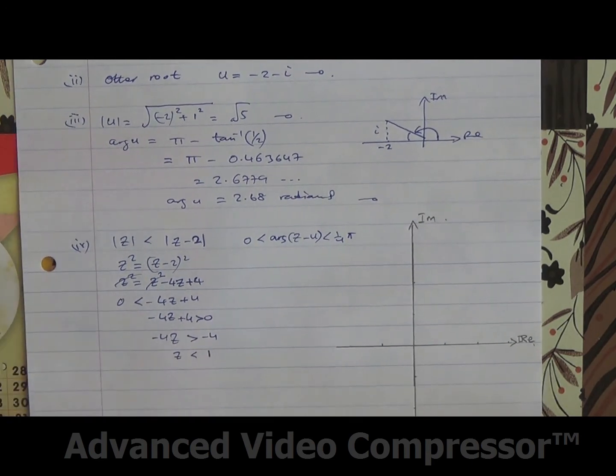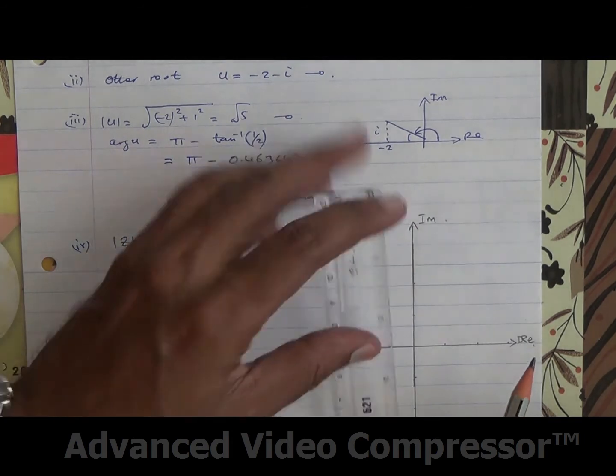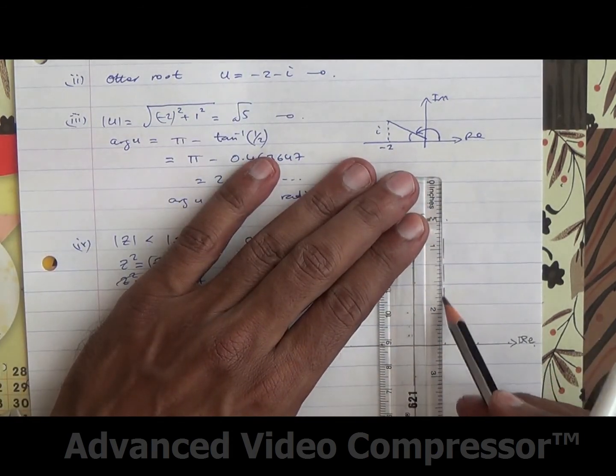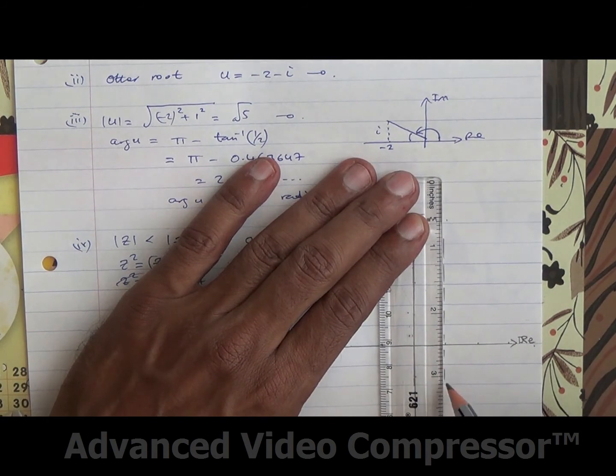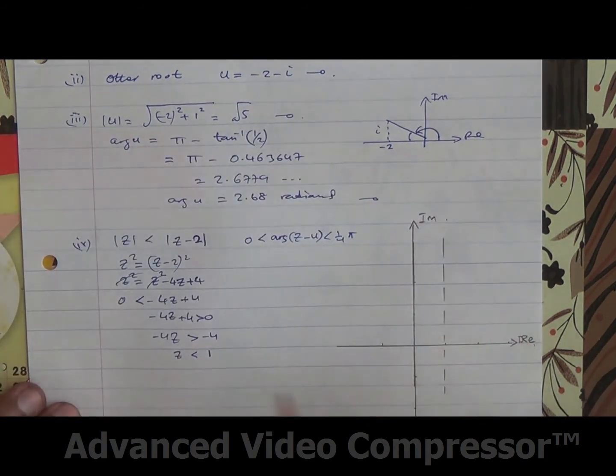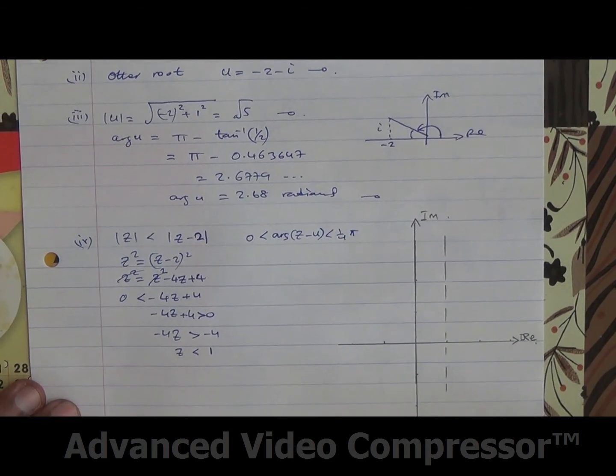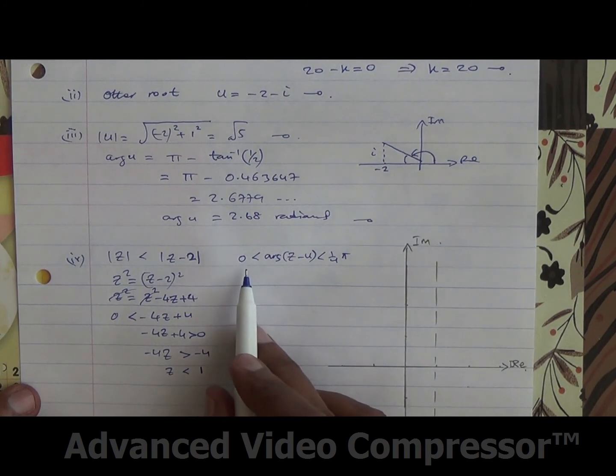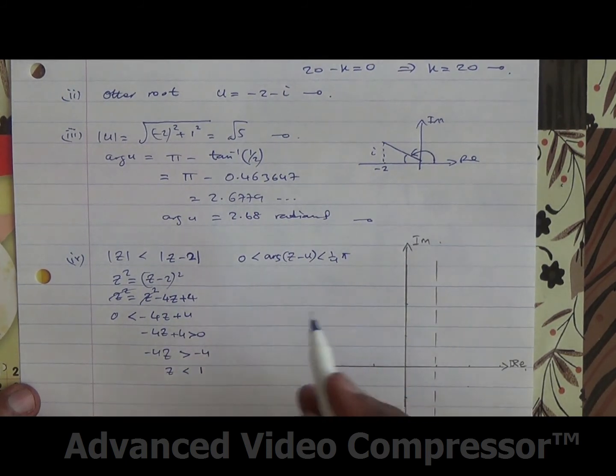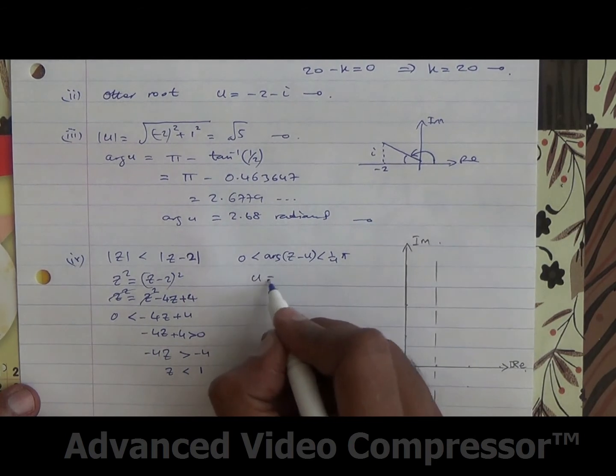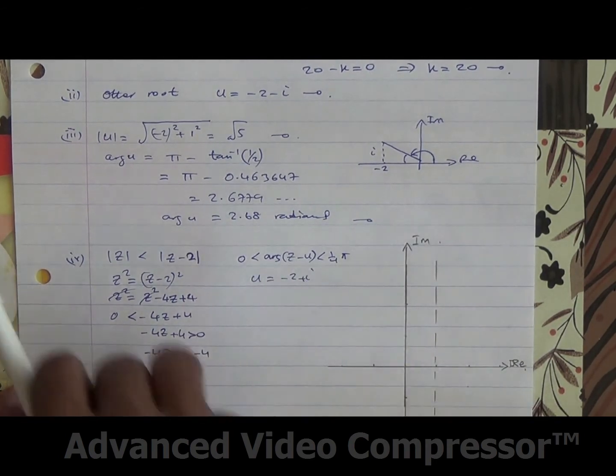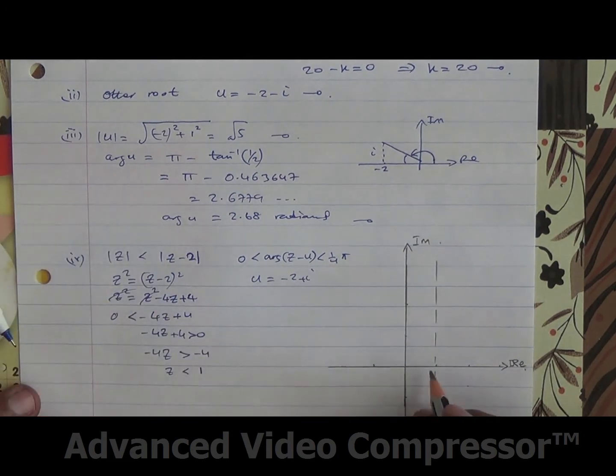So the line that we're looking at is x equals 1 over here. I'm just going to put it as a dotted line. Why? Because the sign is less here. So now for this, 0 being less than the argument of z minus u. And what is u? u was given in the question as minus 2 plus i. So if we look at our diagram, minus 2 is here, and then i is somewhere there.